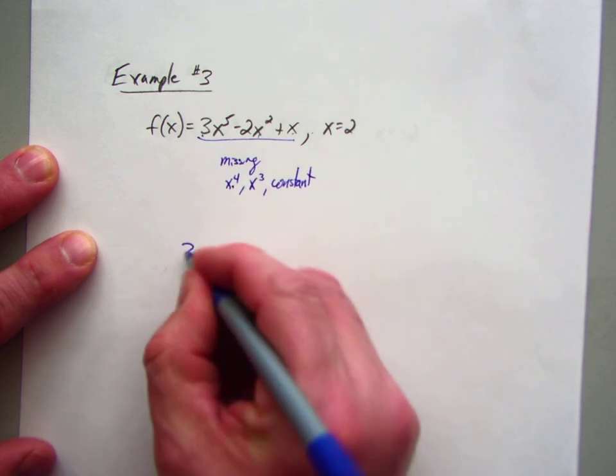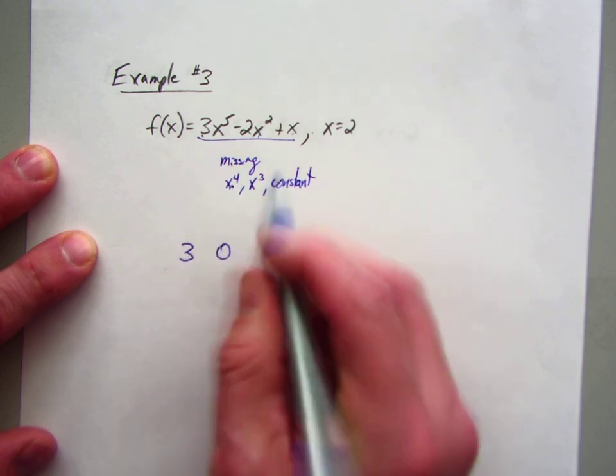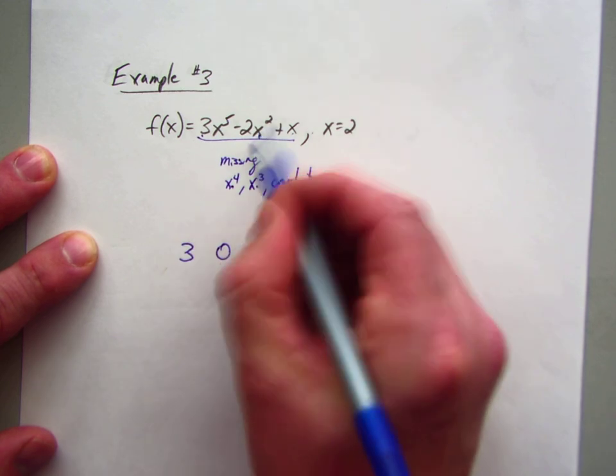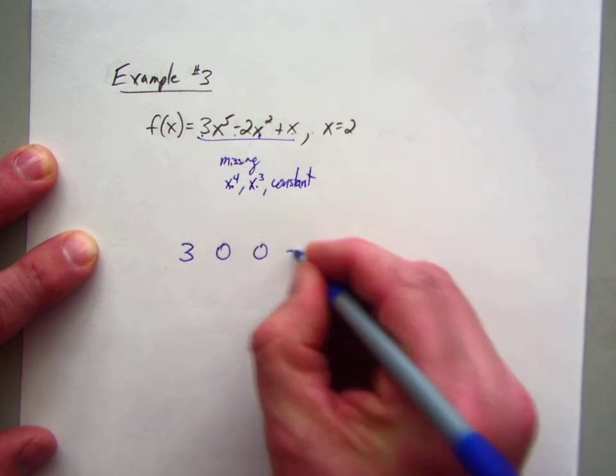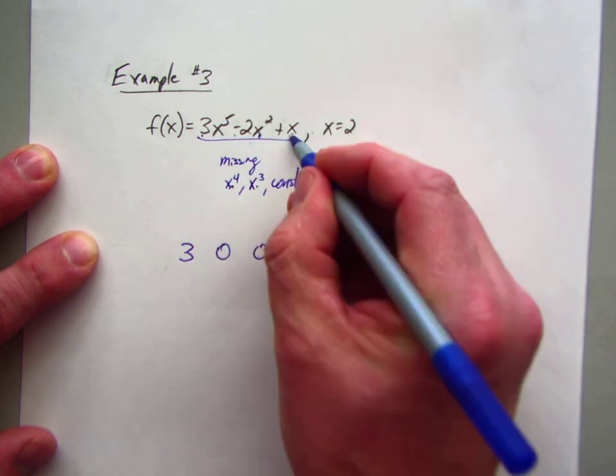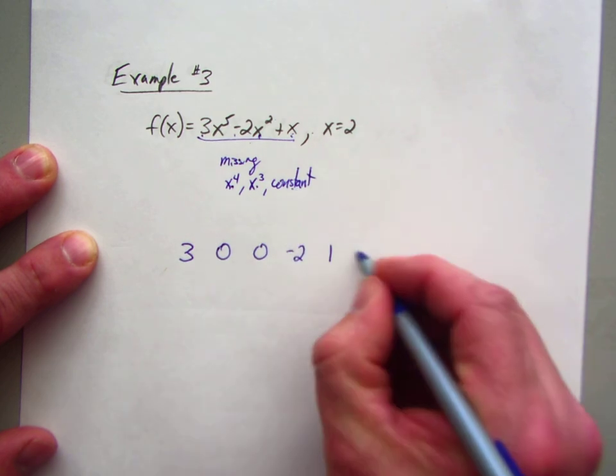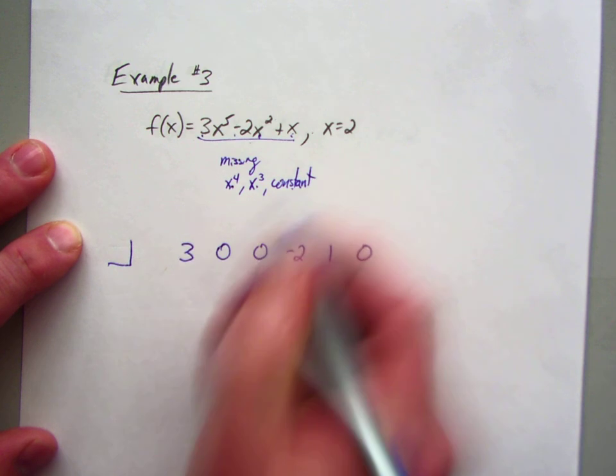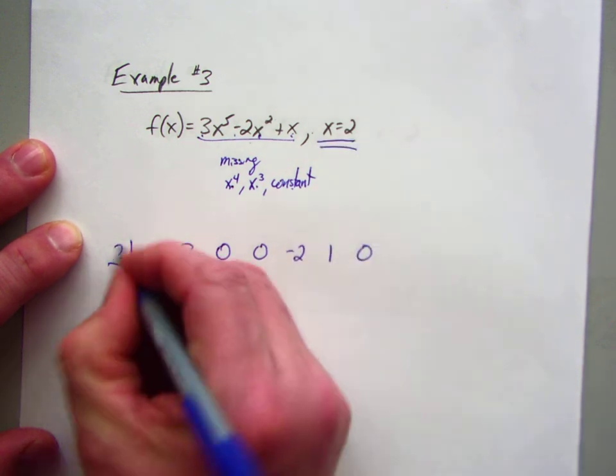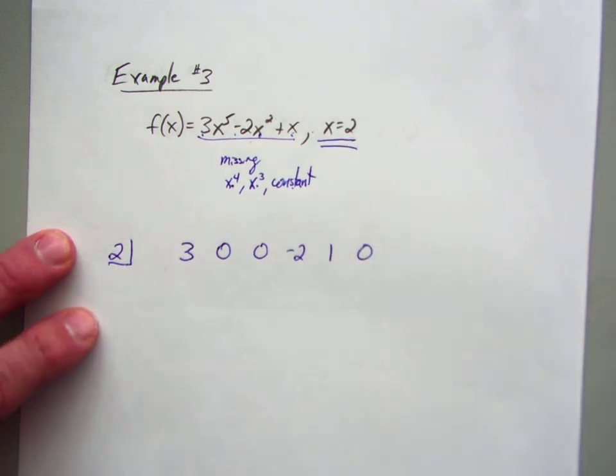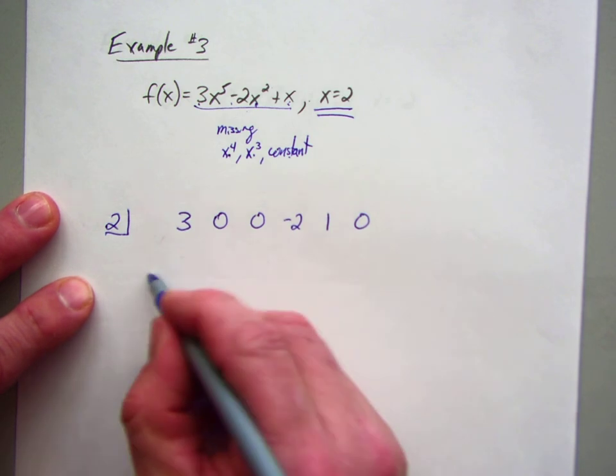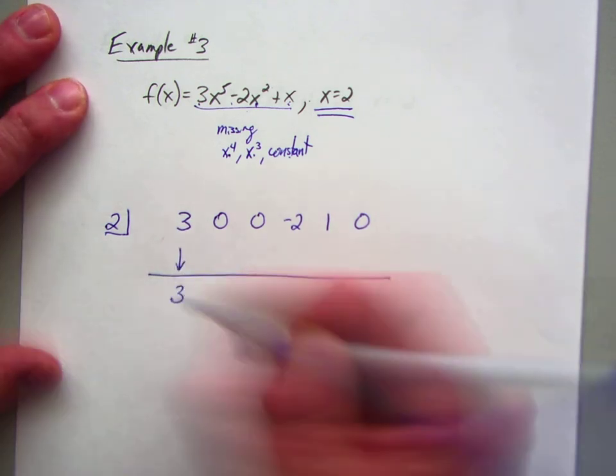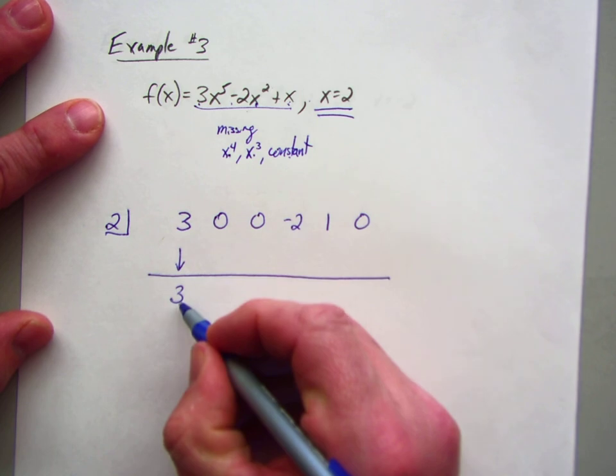So first term is 3. We're missing x to the 4th, so 0. Missing x cubed, 0. The quadratic term, the coefficient is negative 2. Then the coefficient is 1. And we're missing the constant term, so it's 0. Put a little box. What I'm evaluating with is 2. So here we go. Draw a little line. And let's begin the process. First step: just bring it down. So here we go.